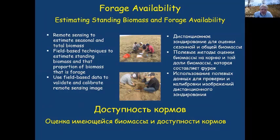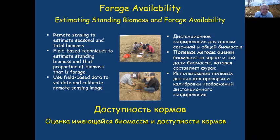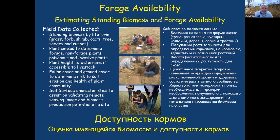To estimate stocking rates, we use remote sensing to estimate the seasonal growth of biomass and total biomass. We combine that with field-based techniques to estimate standing biomass and the proportion of the biomass that is forage. Field-based data is then used to validate and calibrate the remote sensing image.